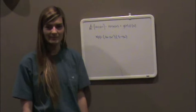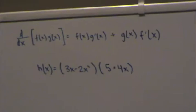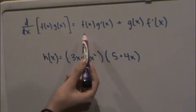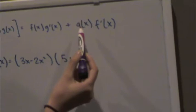Our next topic is the product rule, and this is another way to find a derivative of a function. The derivative of a function times another function is the first term times the derivative of the second term, plus the second term times the derivative of the first term.